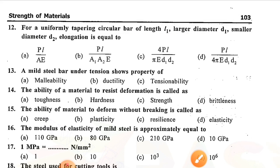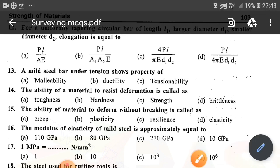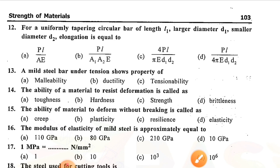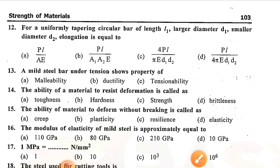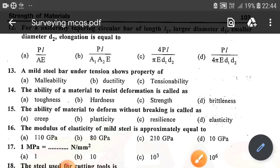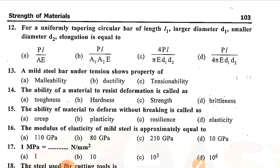Question number fourteen: The ability of a material to resist deformation is called — option C is correct — strength. Question number fifteen: The ability of a material to deform without breaking is called — option B is correct — plasticity. Question number sixteen: The modulus of elasticity of mild steel is approximately equal to — option C is correct — 210 GPa. Question number seventeen: 1 megapascal is equal to — option A is correct — 1 Newton per mm².